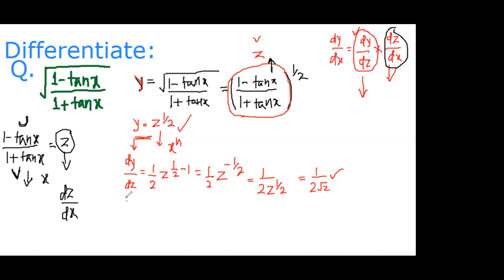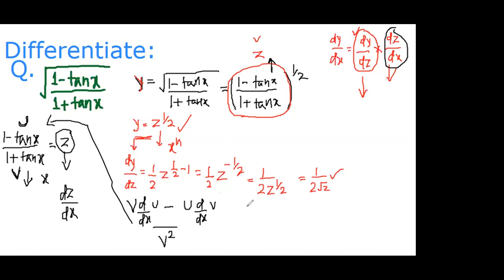Applying the quotient rule: we keep v, differentiate u (first term), then put minus, leave u, differentiate v (second term), all over v². So we write: [(1 + tan x) · d/dx(1 - tan x) - (1 - tan x) · d/dx(1 + tan x)] / (1 + tan x)².